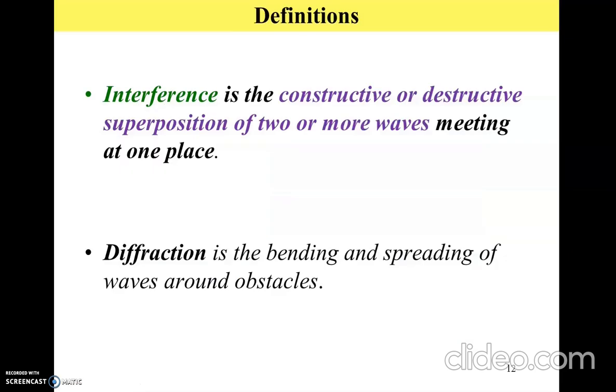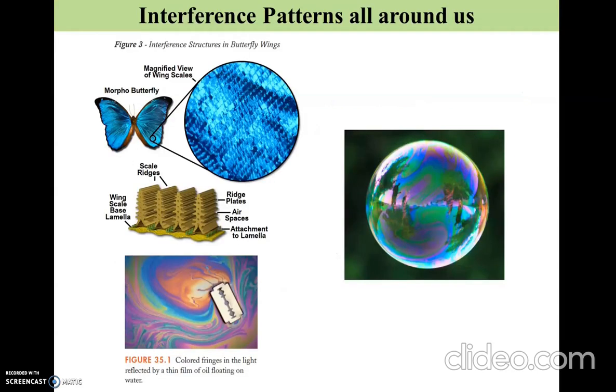Another type of interaction is interference of light. In interference, you get constructive or destructive superposition of two or more waves meeting at a particular place. This is completely a wave-like property because only a wave can occupy the same position in space, whereas a particle cannot.